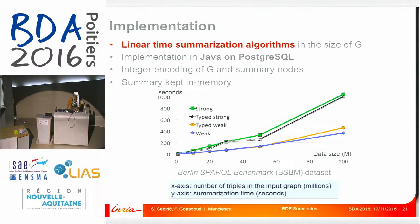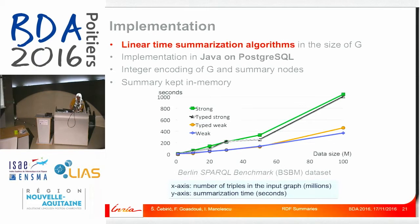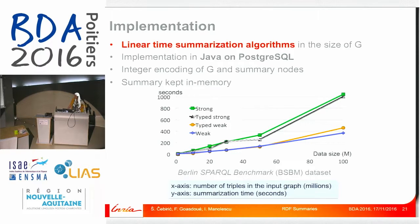All of our summaries can be built in linear time in the size of G. The algorithms are implemented in Java on Postgres and the summaries are kept in memory. The summarization times show that strong and type-strong summaries usually take the longest to compute because we have to pre-compute all the source and target cliques. However, the worst running time was for the strong summary with 100 million triples in the input, which took around 16 minutes — quite good for a centralized implementation.